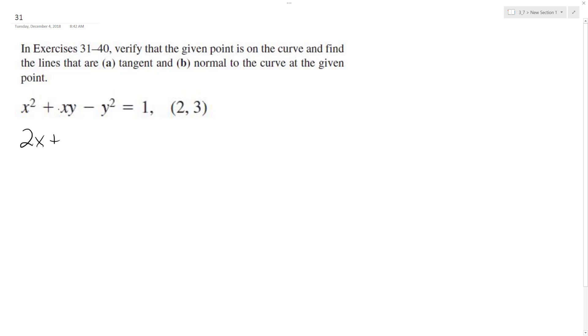be 2x, and then using the product rule here, we're using implicit differentiation, so we get y plus y prime x minus 2y y prime equals 0. So y prime x minus 2y y prime equals negative 2x minus y.